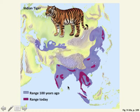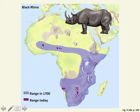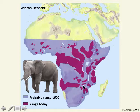Examples of species that have experienced significant habitat loss include the Indian tiger — shown on a map where blue represents their historical range and red shows where they exist today — and the Asian elephant. A helpful distinction: African elephants have big ears, Asian elephants have small ears.